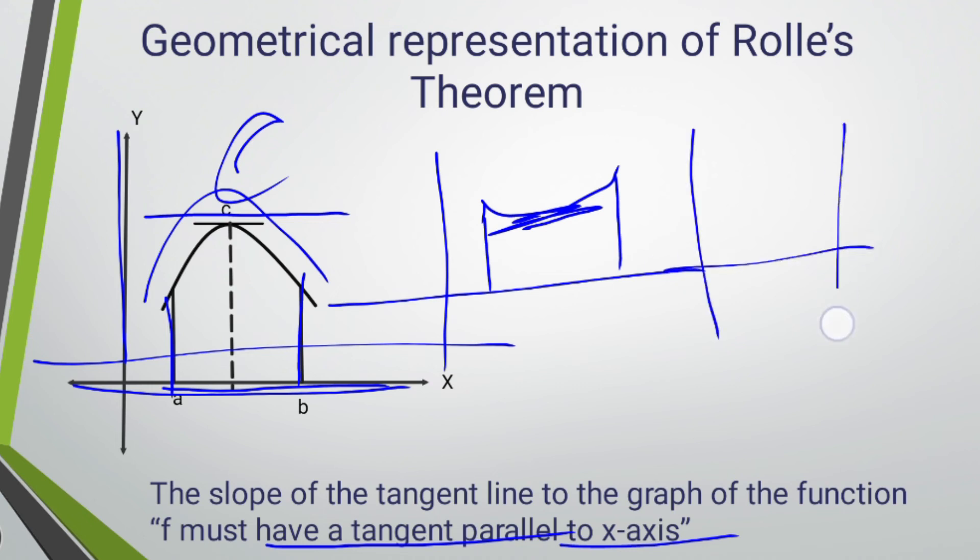If we have a graph of a different shape, then we may have more than one tangent. There may exist more than one tangent which is parallel to the x-axis between a and b.